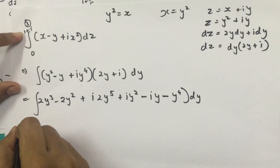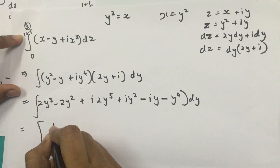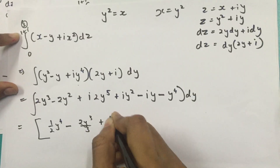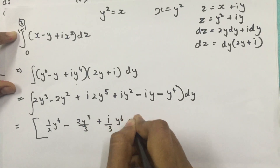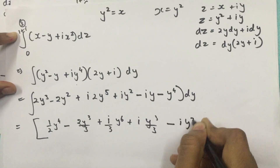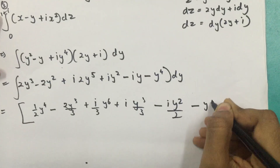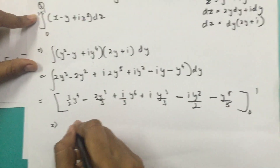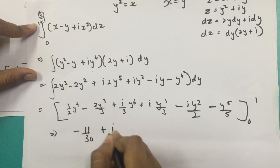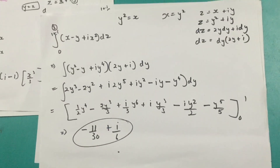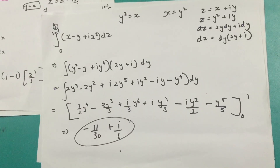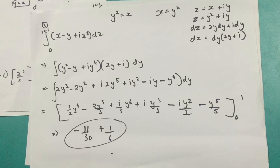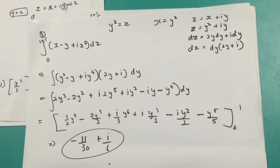Integrating term by term and evaluating from 0 to 1, the final answer is -1/30 + i/6. So that's how you do it guys — this is the end of the complex integration lecture. Thank you guys so much for watching. If you don't understand it, please leave a comment below, and do subscribe, like, and comment.